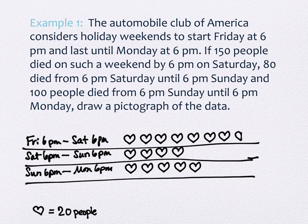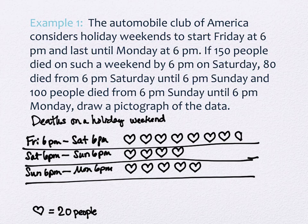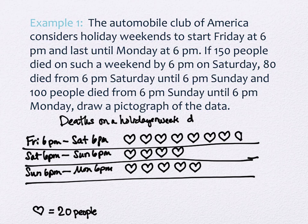The last thing we haven't done yet: our graph needs a title that describes what we found. This graph's title would be something like 'Deaths on a Holiday Weekend.' Our category descriptions over here already included the time ranges, and we have a key at another location, so we don't have to repeat that in the title. But it needs to describe what you've just shown.